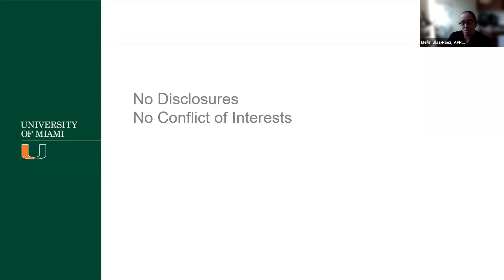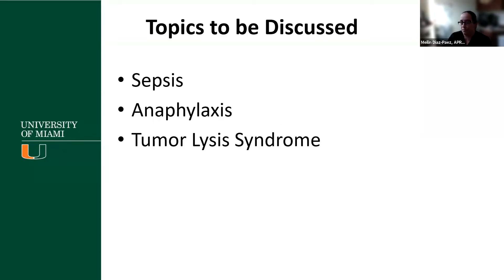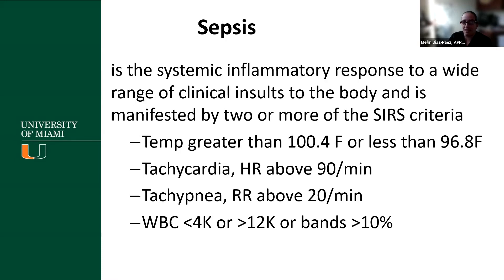I have no disclosures and no conflict of interest. We're going to do a brief overview of sepsis, anaphylaxis, and tumor lysis syndrome due to time constraints. Obviously, there are a lot more oncological emergencies that we can discuss. First, we're going to go over sepsis — sepsis is the systemic inflammatory response to a wide range of clinical insults to the body, manifested by two or more of these criteria.